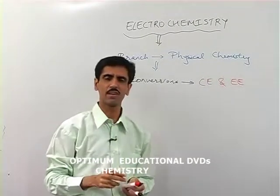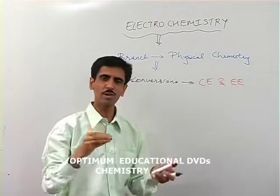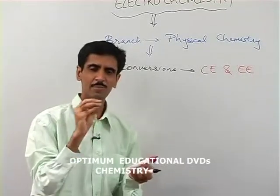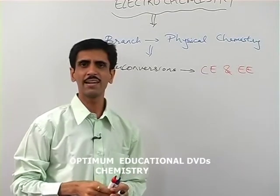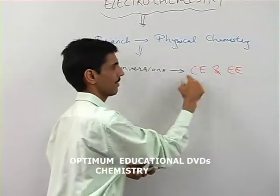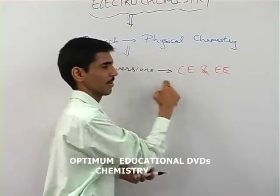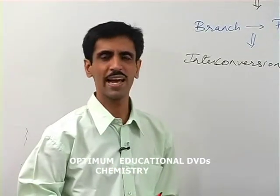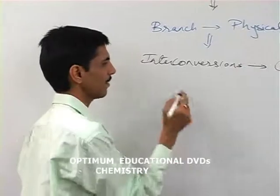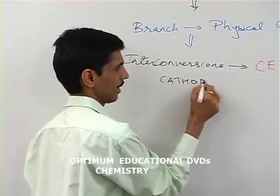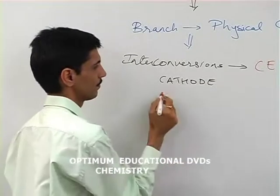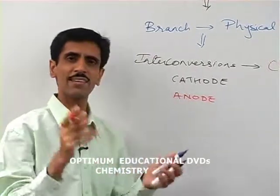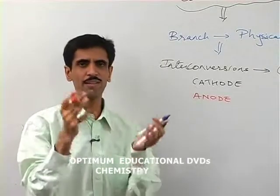Before we go into each and every concept of this chapter, let us consider some basic terms. Whether a reaction is converting chemical energy into electrical energy or vice versa, we always require two electrodes. Those electrodes are called cathode and anode.